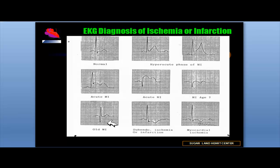Now let's look at two other conditions that mimic myocardial ischemia. Subendocardial ischemia is characterized by ST segment depression from the baseline along with T wave inversion. If a person has these same changes along with evidence of elevated cardiac enzymes, then it will be considered a subendocardial myocardial infarction or non-Q wave myocardial infarction.